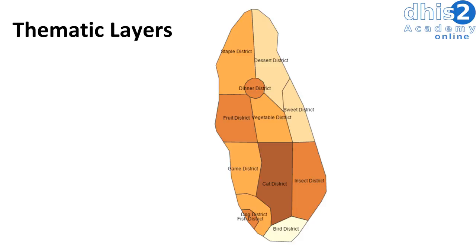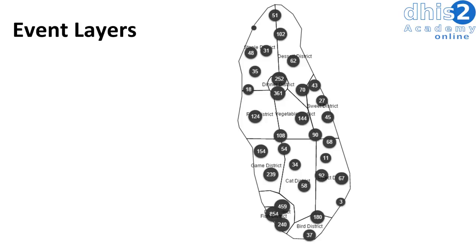As another example, we have what we refer to as a thematic layer. These thematic layers allow us to visually represent our data on a map. We also have what we refer to as event layers, which allow us to visualize individual events on the map. For example, I can map individual malaria cases if I want to track them to their individual location.